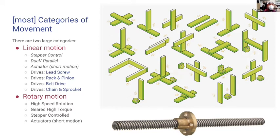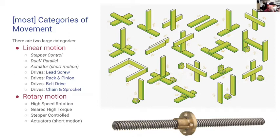Once you get into those categories, there are steppers for controlling motion, dual and parallel linear motion — which has serious cost benefits — and actuators for short motions. There are also four different types of drives we'll circle back to in a minute. Then there's rotary motion: high-speed rotation, geared high torque, stepper-controlled, and actuators again.